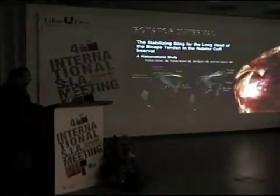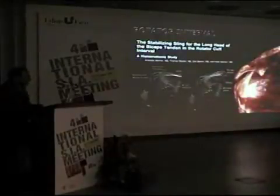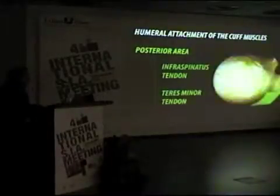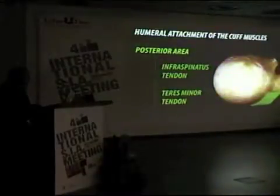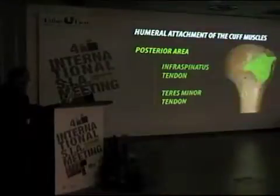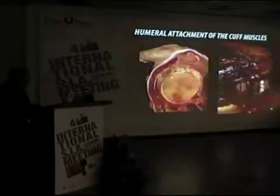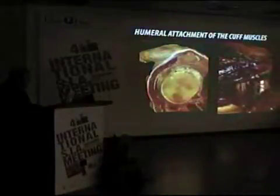The supraspinatus tendon crosses below the acromioclavicular joint. This tendon attachment is also covered by the posterior cord of the coraco-humeral ligament. The posterior area: the infraspinatus and the teres minor muscle are attached on the posterior side of the greater tuberosity. These muscles form a real muscle wrap in the posterior part of the greater tuberosity, and their muscle bellies are positioned more distal than the supraspinatus and subscapularis muscles.